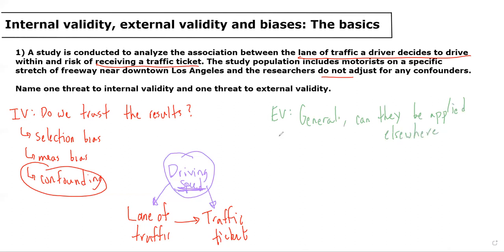And remember that the two main ways that external validity can be threatened is if we're looking at a special population or if we're looking at some sort of special exposure or treatment.